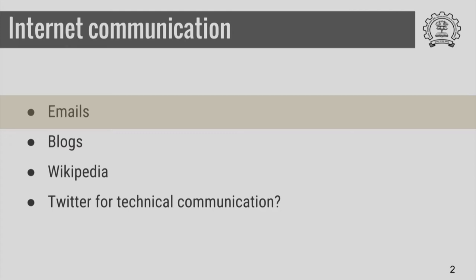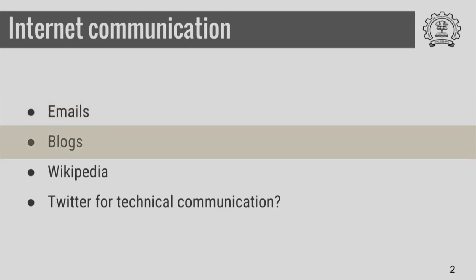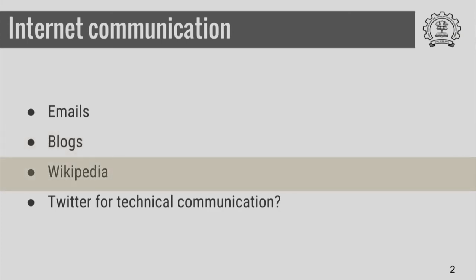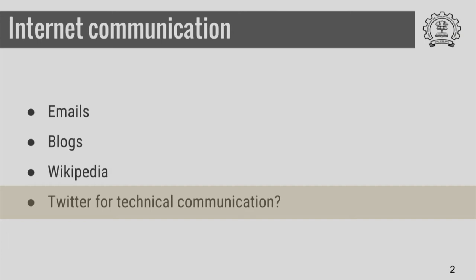As I said, internet communication consists of several things. Emails is one of the ways in which you communicate. Then there are blogs which some of you might be writing, and then there are internet pages like Wikipedia where people try to communicate technical information. It could be an interesting idea to see if Twitter can be used for technical communication. For example, recently there was a contest of writing a short story using Twitter. Can you take one of your papers and communicate the idea in 140 characters? Emails are meant for a much smaller audience, blogs for a slightly wider audience, and Wikipedia is meant for the entire universe. Twitter also is to some extent limited communication, but emails is the one which almost all of us use, have used, and will continue using.